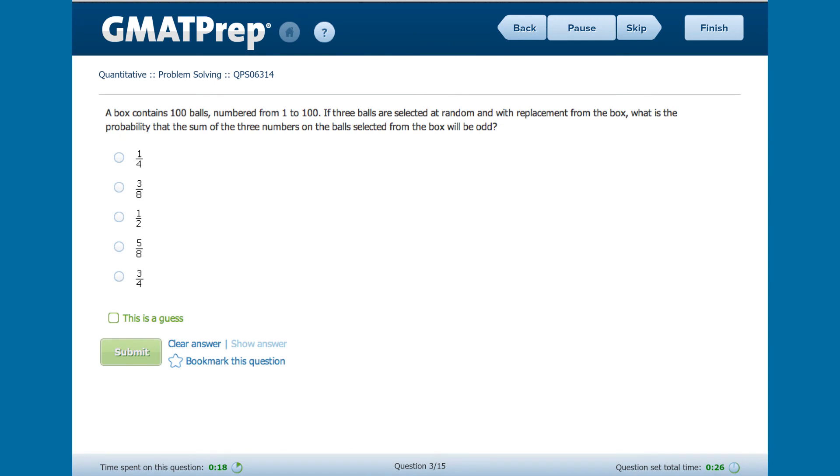All right, onto our probability problem. Again, feel free to pause and read on your own. This question asks us the probability that the sum of three numbers will be odd when each number is selected from one to 100. We see that the balls are selected with replacement, which makes a lot of test takers want to jump straight into an independent probability equation. But let's take a minute to sort out what the question even means.